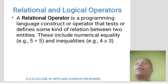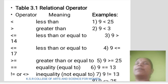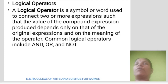Relational and logical operators. A relational operator is a programming language construct that tests or defines some kind of relation between two entities. This includes numerical equality, for example 5 equals 5, and inequality, for example 4 greater than or equal to 3. The relational operators are: less than, greater than, greater than or equal to, equality, and inequality.